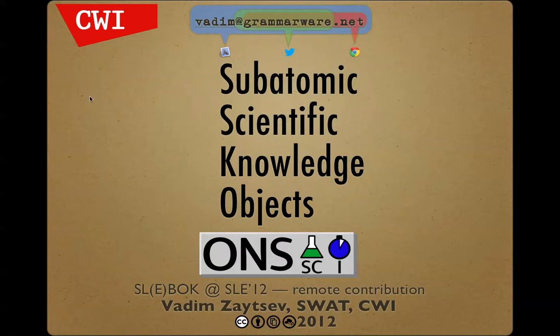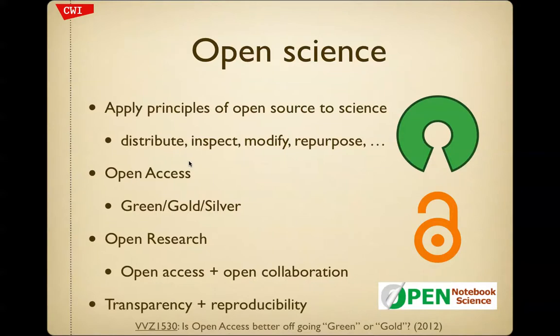I was asked to talk about open notebook science, but actually after adjusting it to the SLEBOC, the topic has become subatomic scientific knowledge objects. We start with the premise that we want to take the principles and ideas of open source and apply them to science — so we want scientific knowledge objects that we can distribute, analyze, modify, change, repurpose, specialize, and so forth.